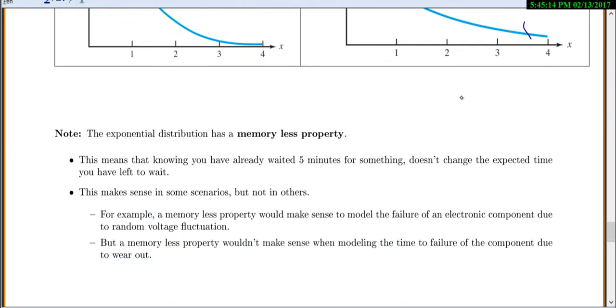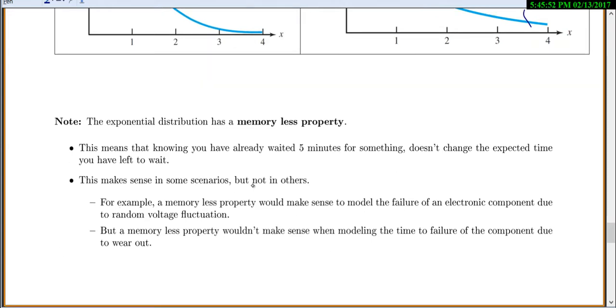Now, the exponential distribution has one interesting property called the memoryless property. And this is interesting because it means that knowing you've already waited 5 minutes for something doesn't actually change the expected time that you have left to wait. And this doesn't apply to all situations in real life, you only use the exponential distribution when it does apply. So it would be like saying, I went to the doctor, and I already waited 5 minutes. That doesn't actually change how long I'm expecting to keep waiting. So it's probably not really a good example, because at a doctor's office, hopefully my time goes down as I wait. So it does make sense in some scenarios, but not everything.